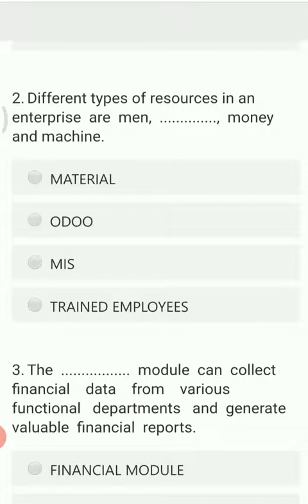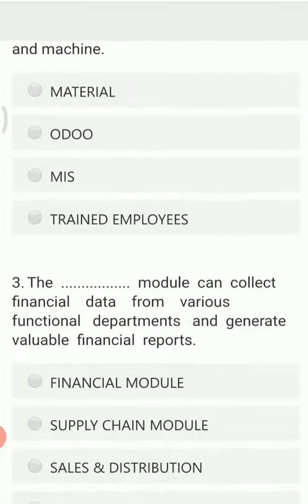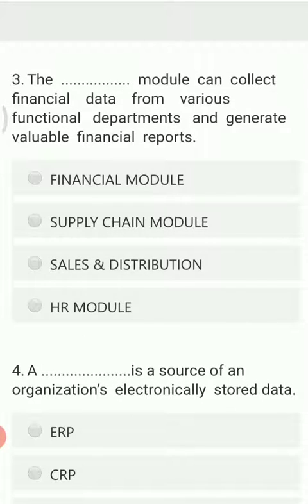The second question is: two different types of resources in an enterprise are men, money, and machine. Along with men, money, and machine, what other things do we require as a resource for an enterprise? The options are material, Odoo, MIS, and trained employees. The right answer is material.